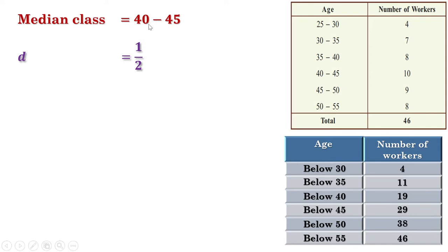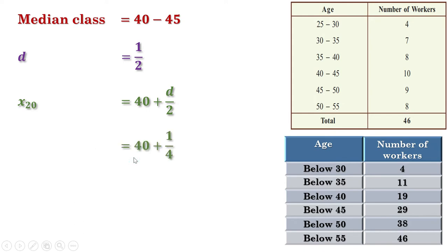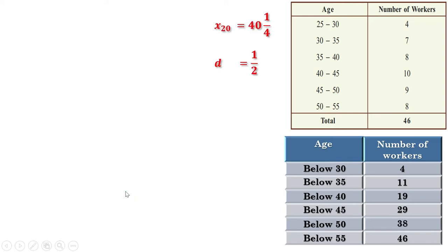d is 1 by 2, therefore d by 2 is 1 by 4. That means the 20th term is 40 plus 1 by 4, or 41 by 4. Now we have to find the two middle terms, that is the 23rd term and 24th term. Let us take the 23rd term first.